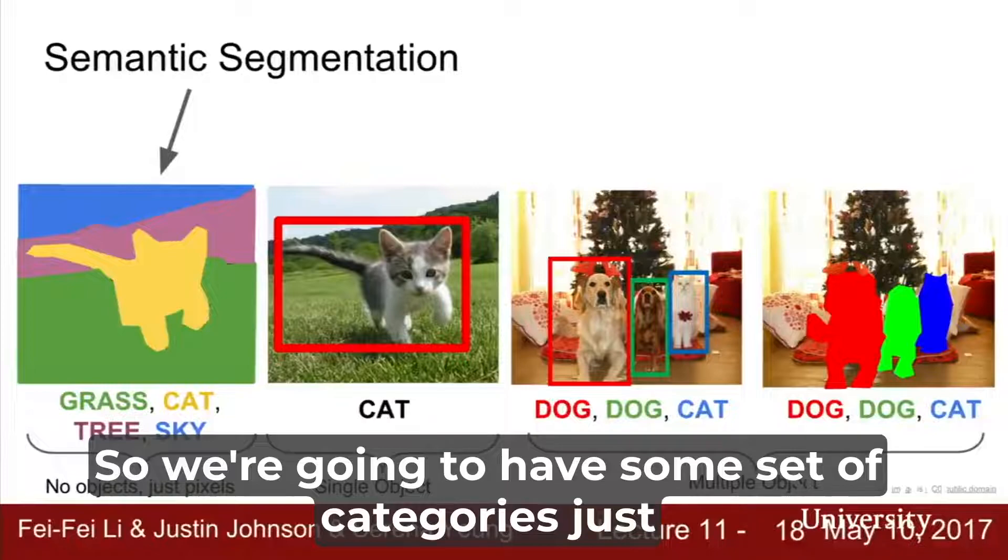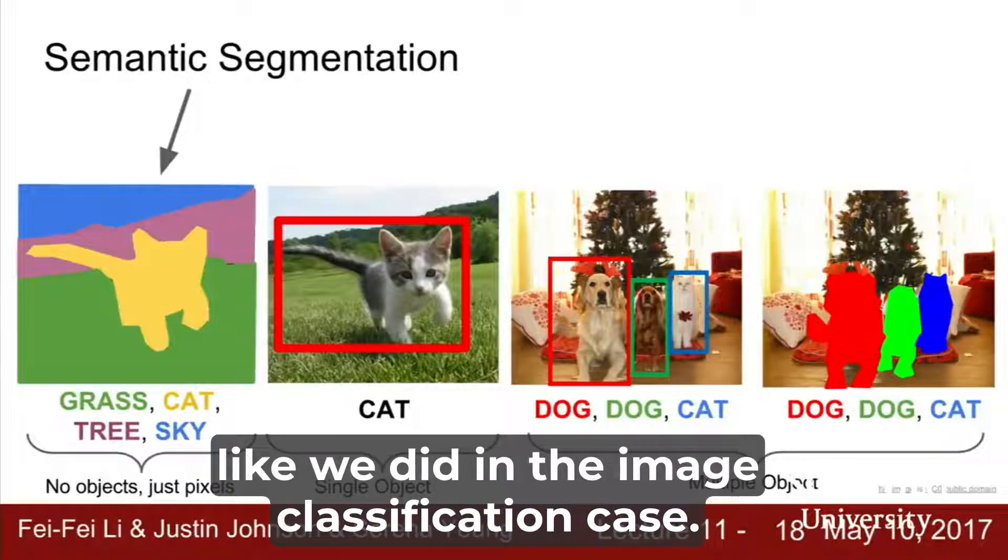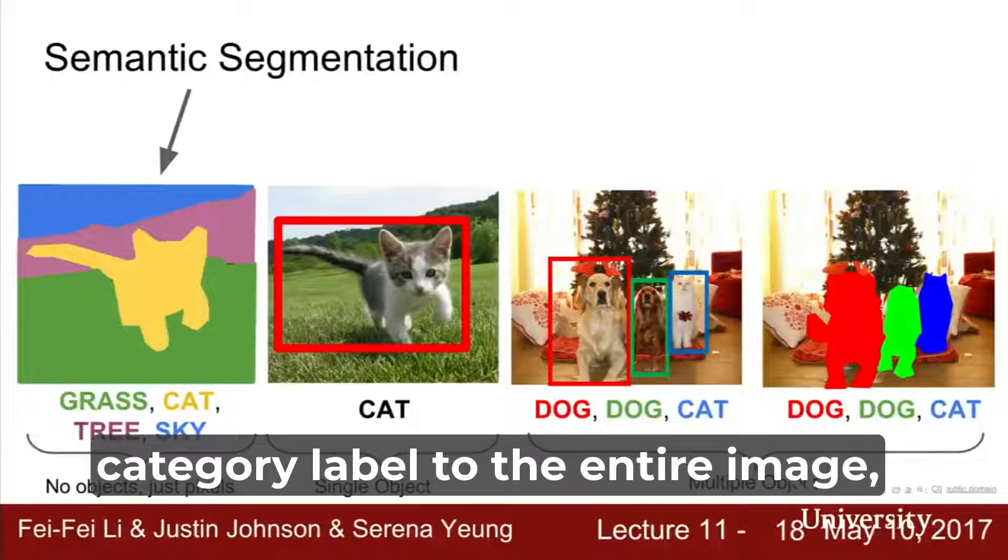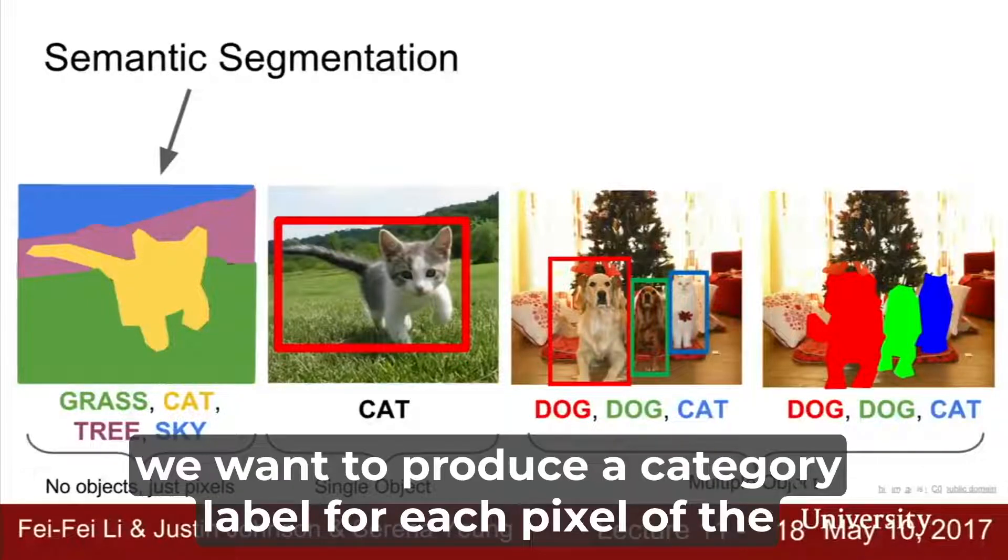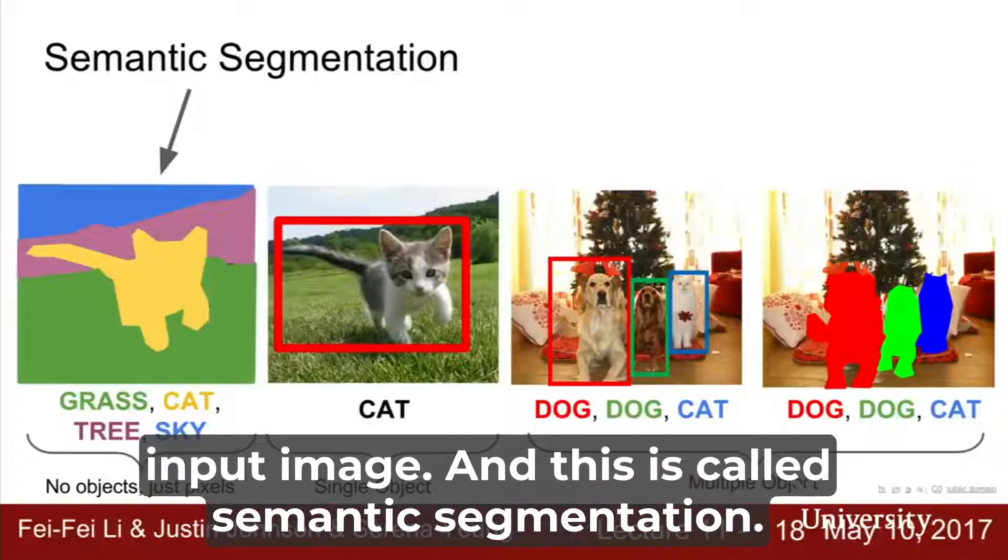We're going to have some set of categories just like we did in the image classification case, but now rather than assigning a single category label to the entire image, we want to produce a category label for each pixel of the input image. And this is called semantic segmentation.